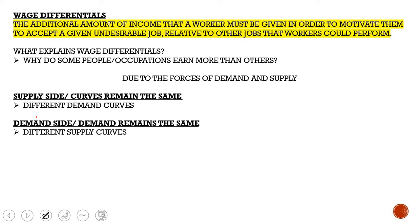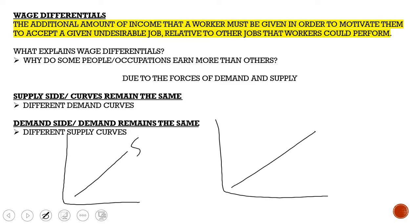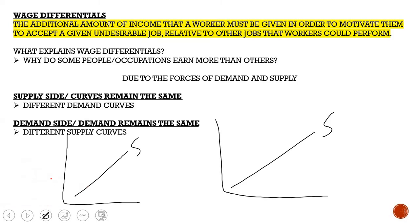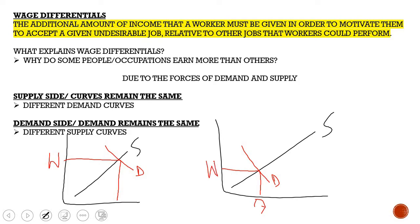On the supply side, the supply curve remains the same and you have different demand curves. With strong demand, your demand curve lies higher on your supply curve, giving a higher wage rate and higher quantity of labor. With low demand, your demand curve sits lower on your supply curve, so both the wage rate and quantity of labor are lower compared to the first scenario.